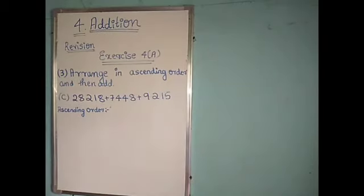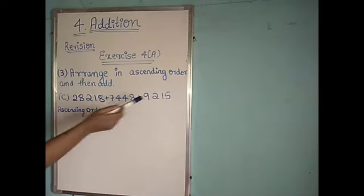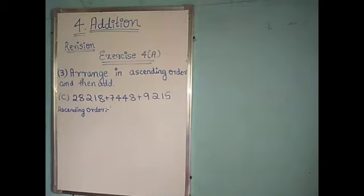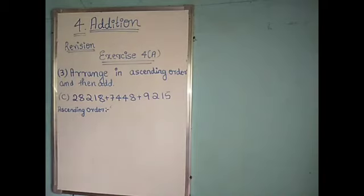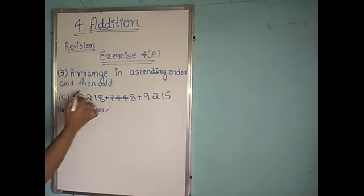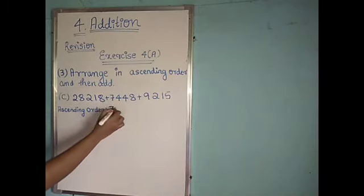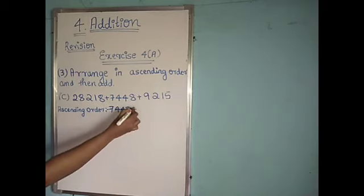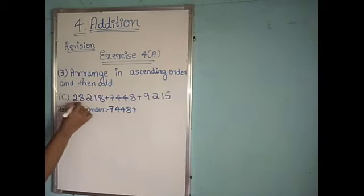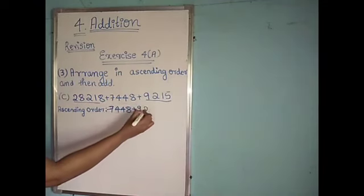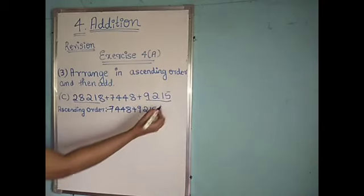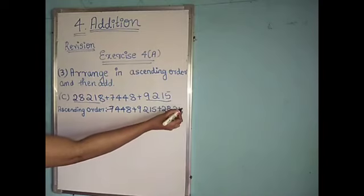Let's solve C1: 20,218 plus 7,448 plus 9,215. First, we have to arrange these numbers in ascending order — from the smallest to the largest. Among these, 7,448 is the smallest. Next, 9,215 is the smallest among the remaining. Then the next number is 20,218.